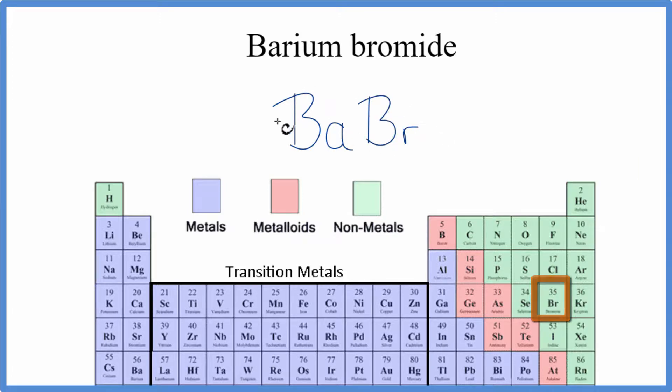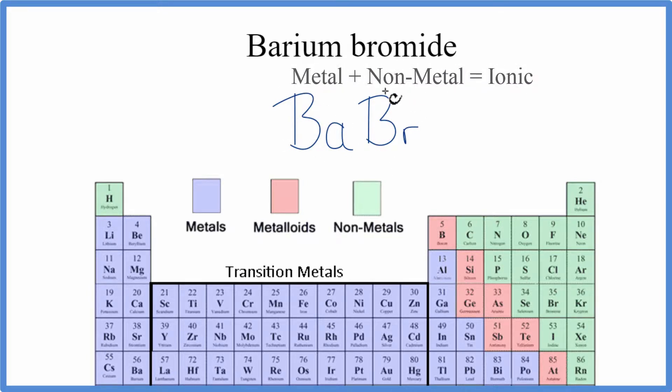So we have a metal, barium, and bromine, that's a nonmetal. And when we have a metal and a nonmetal, that's an ionic compound.